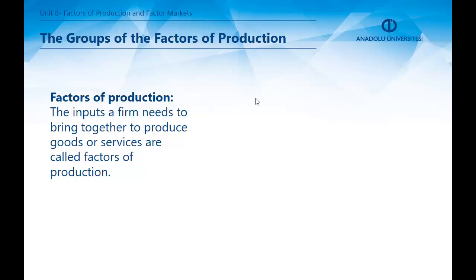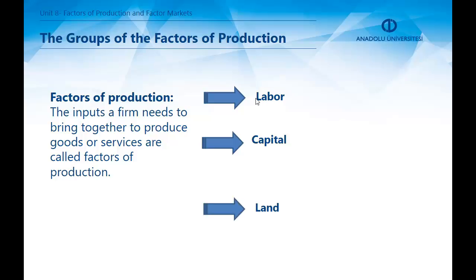We will start our chapter by first defining what the factors of production are. According to classical economists, there are three groups of factors of production: labour, capital, and land.